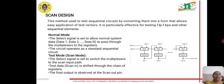Scan design contains two modes: normal mode and test mode. In normal mode, the select signal is set to allow normal system data to pass through the multiplexers to the registers, and the circuit operates as a standard sequential circuit. In test mode, also called scan mode, the select signal is set to switch the multiplexers to the scan input path, and the test data is shifted through the chain of registers.